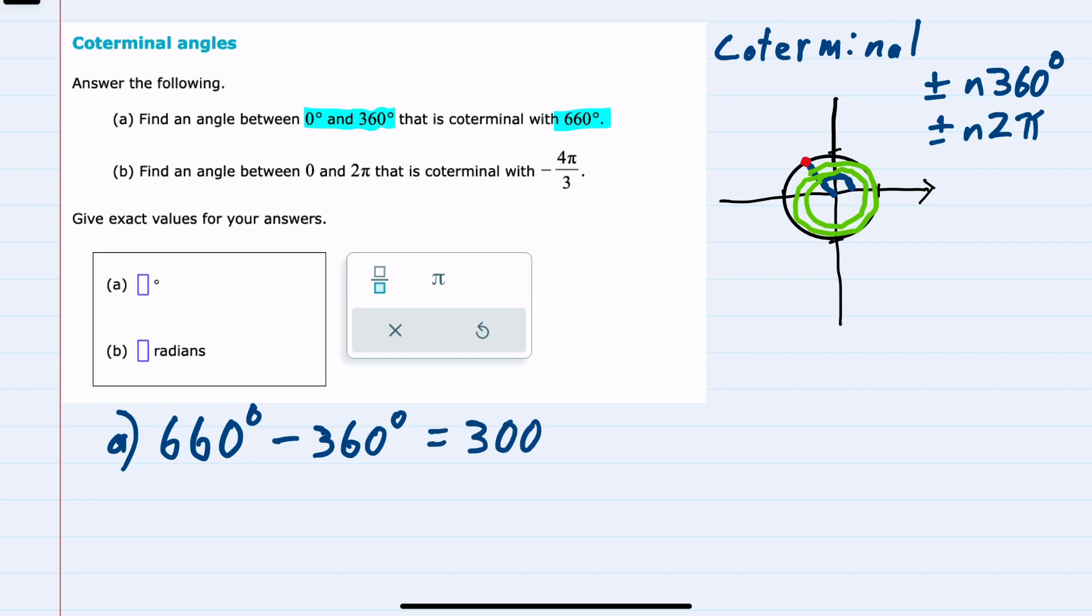For question B, we start with negative 4π/3. We're asked to find its coterminal angle between 0 and 2π. Since this is a negative angle,